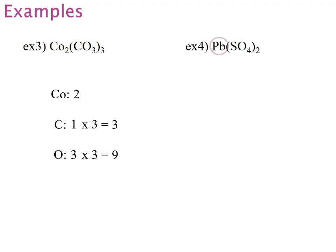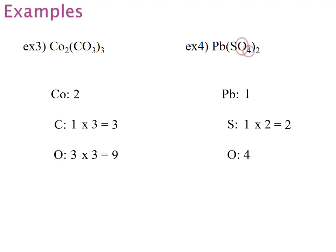Now let's look at lead(IV) sulfate. I have Pb — I know they go together because the b is lowercase. I have S all by itself, and I have a capital O which goes all by itself. Pb: there is just 1 of them, so I have 1 lead atom. Sulfur: there is just 1 of them, but it is inside of brackets so I must multiply it by 2, giving me a total of 2 sulfur atoms. Oxygen: there are 4 of them — it is also inside of brackets, so I will have to multiply it by 2, giving me a total of 8 oxygen atoms.